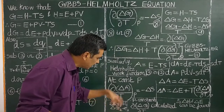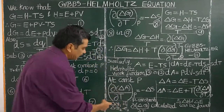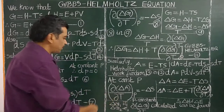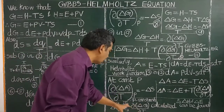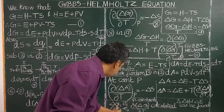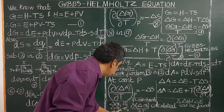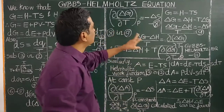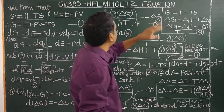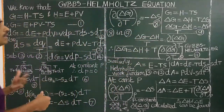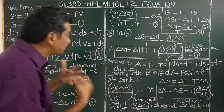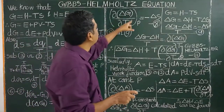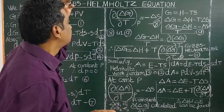The free energy change of a reaction at temperature T1 is delta G1, and at temperature T2 the free energy change of a reaction is delta G2. The change in entropy is very difficult to determine experimentally, but delta G can be measured.